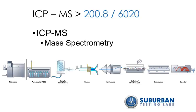MS stands for mass spectrometry. With an ICP-MS, the sample goes from auto sampler to detector. ICP-MS analysis is achieved by ionizing the sample with ICP and then using a mass spectrometer to separate and quantify those ions. ICP-MS has great speed, precision, and sensitivity.